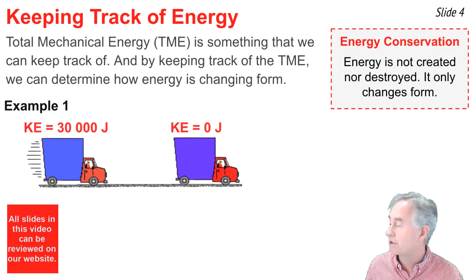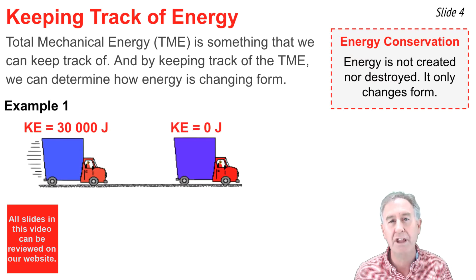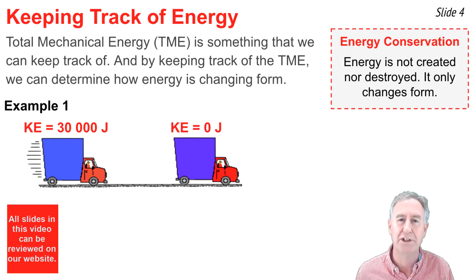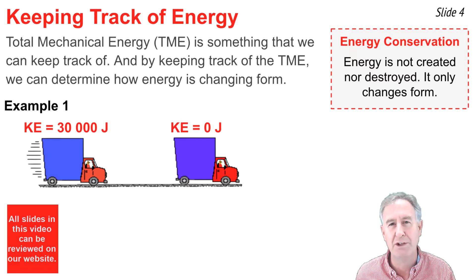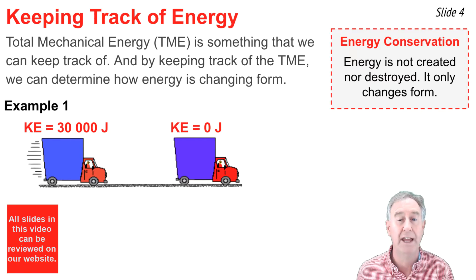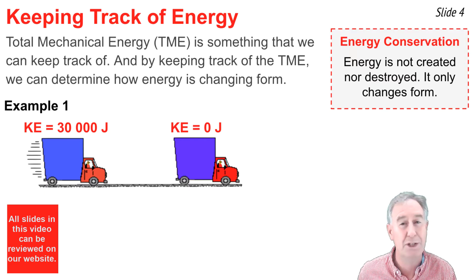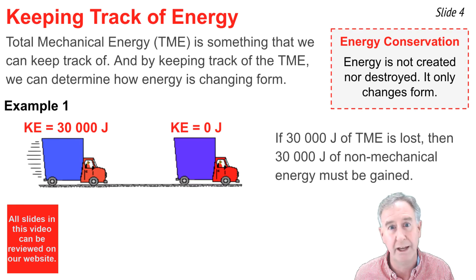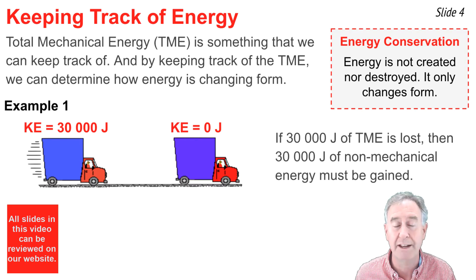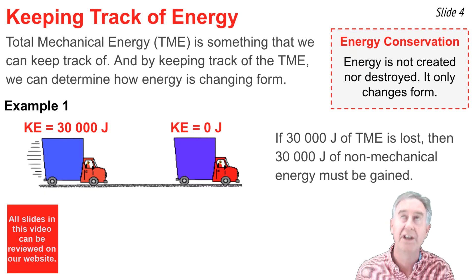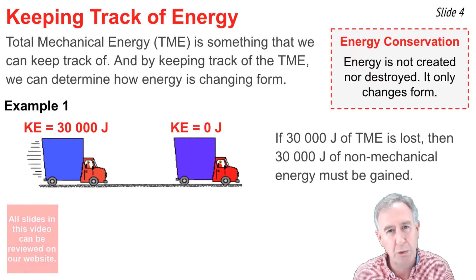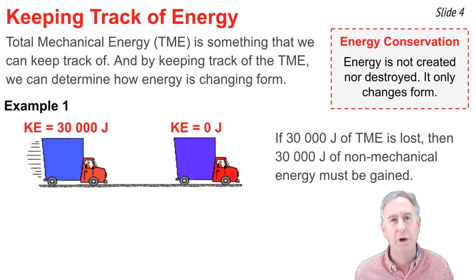Consider a truck moving with 30,000 joules of kinetic energy on the highway, so it has zero joules of potential energy and a total mechanical energy of 30,000 joules. The truck brakes to a stop and thus has zero joules of kinetic energy and, because it's on the ground, zero joules of potential energy. This truck has lost 30,000 joules of total mechanical energy. We predict that this energy has gone somewhere, because energy is neither created nor destroyed, but only changes form.